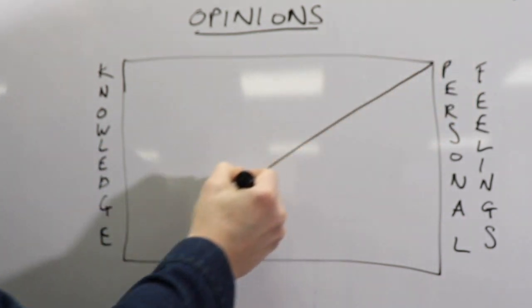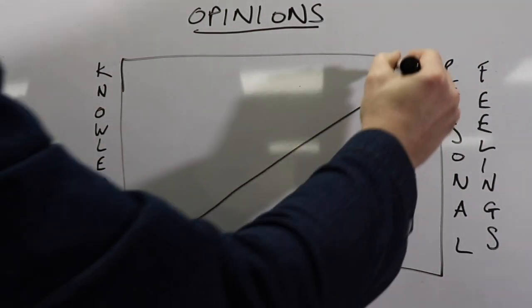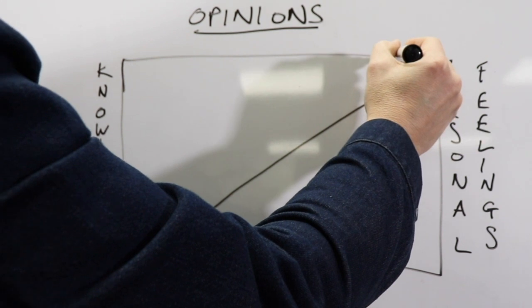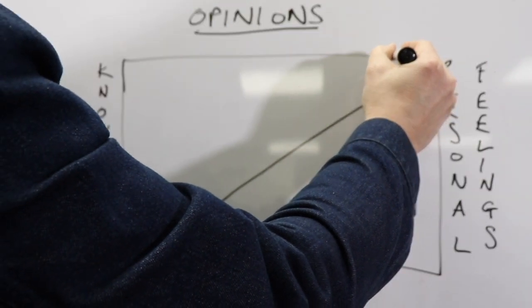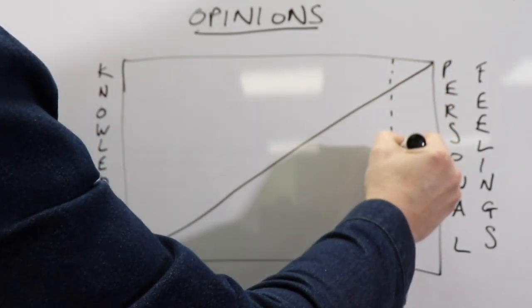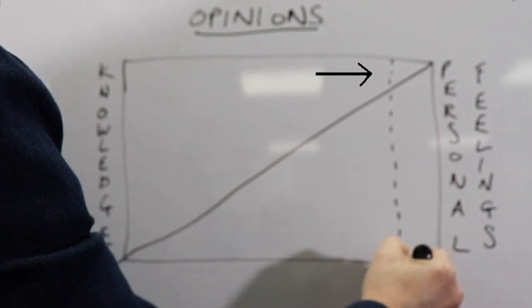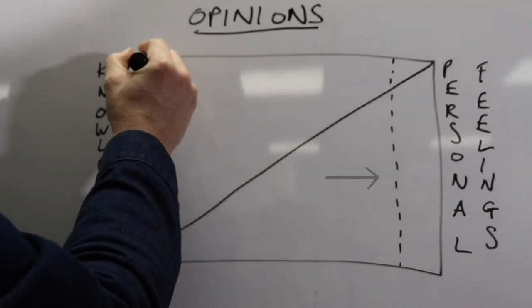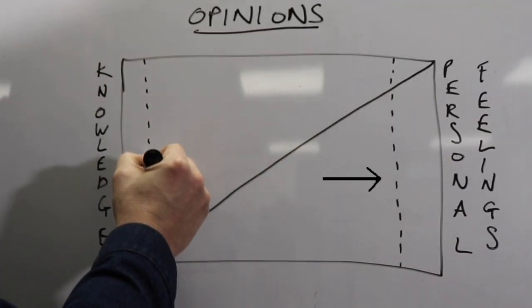Now we draw this diagonal line here and we're going to draw another dotted line that represents an opinion based mostly on personal feelings and a little bit on knowledge. See that from the top of the rectangle to the diagonal line is knowledge, and from the diagonal line to the bottom of the rectangle that's personal feelings.